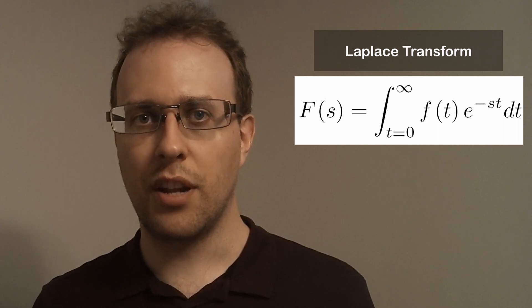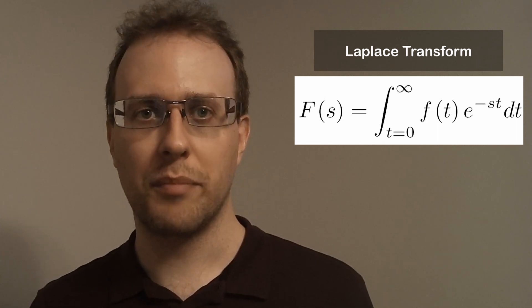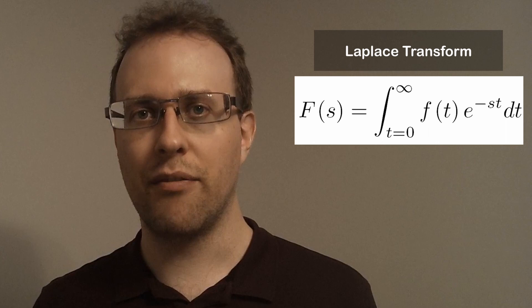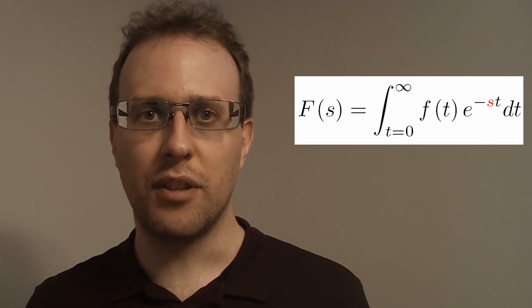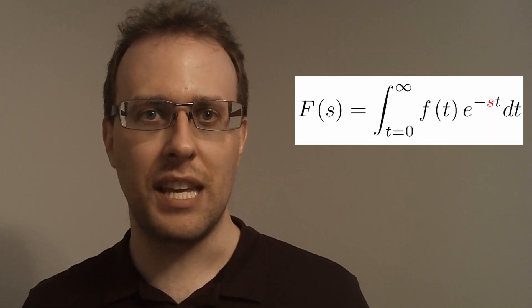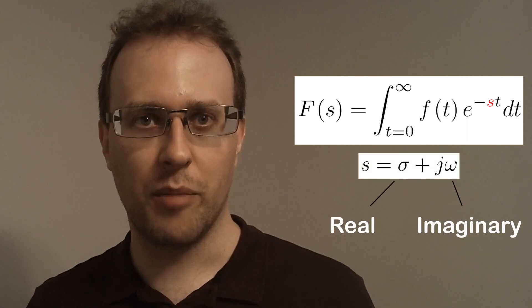The transform uses an integral over time to convert small f of t into big F of s. The integral includes the term e to the power of minus s times t.